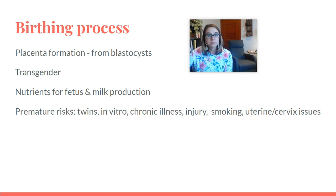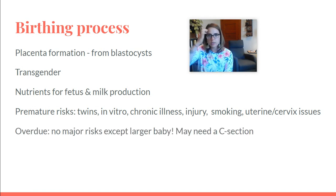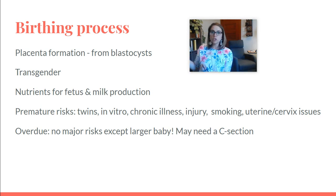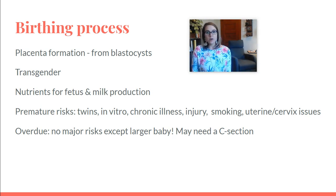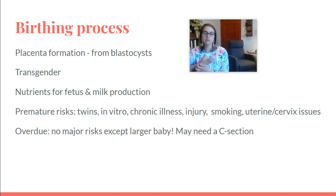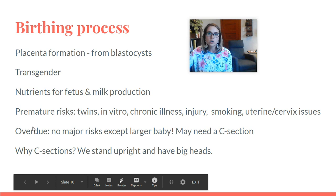Some babies are overdue — past full term, which is 40 or 42 weeks. And by the way, that's actually 10 months from conception, not nine months — it's nine months from when you find out. There are not major risks with a post-term baby, but the baby is bigger because it's been growing longer. So you might need a C-section because a larger baby fitting through a narrow birth canal may be difficult. The placenta may also fail because it's not meant to supply for that long, which could also require an emergency C-section. Being overdue is less severe or risky than being premature.